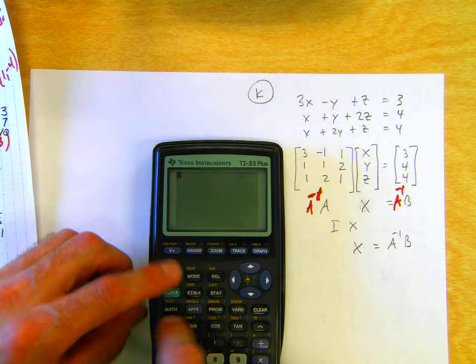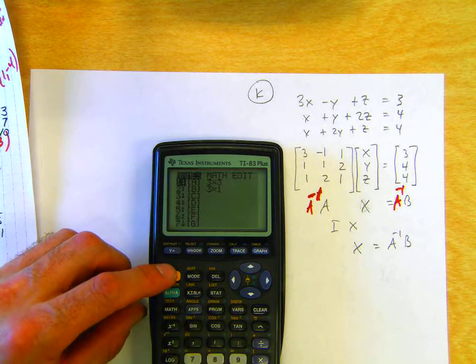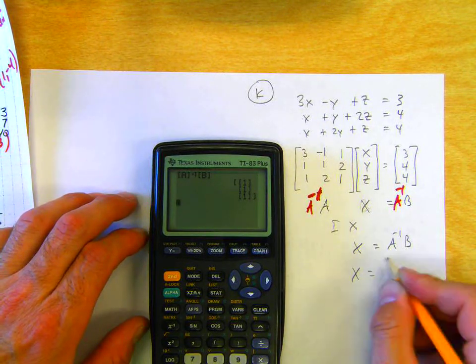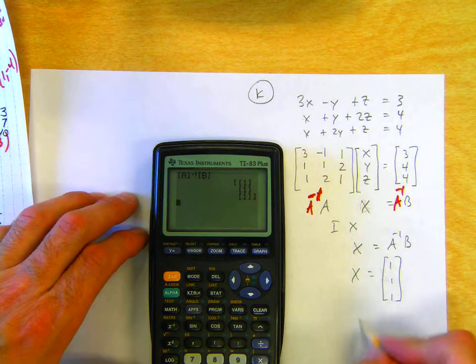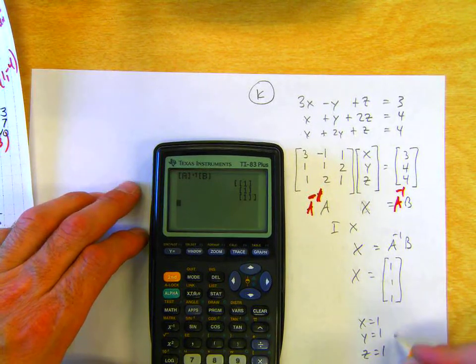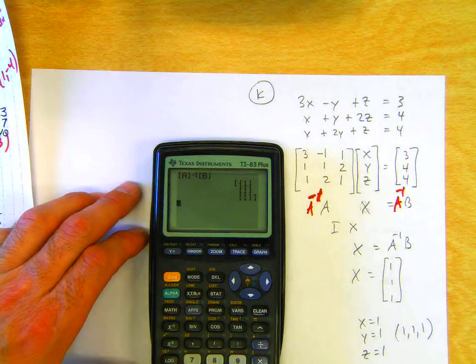So we can do matrix A inverse, matrix B, and we can get the answer x equals 1, 1, 1. It's kind of an interesting answer. x equals 1, y equals 1, z equals 1, or the lines intersect at coordinate 1, 1, 1.